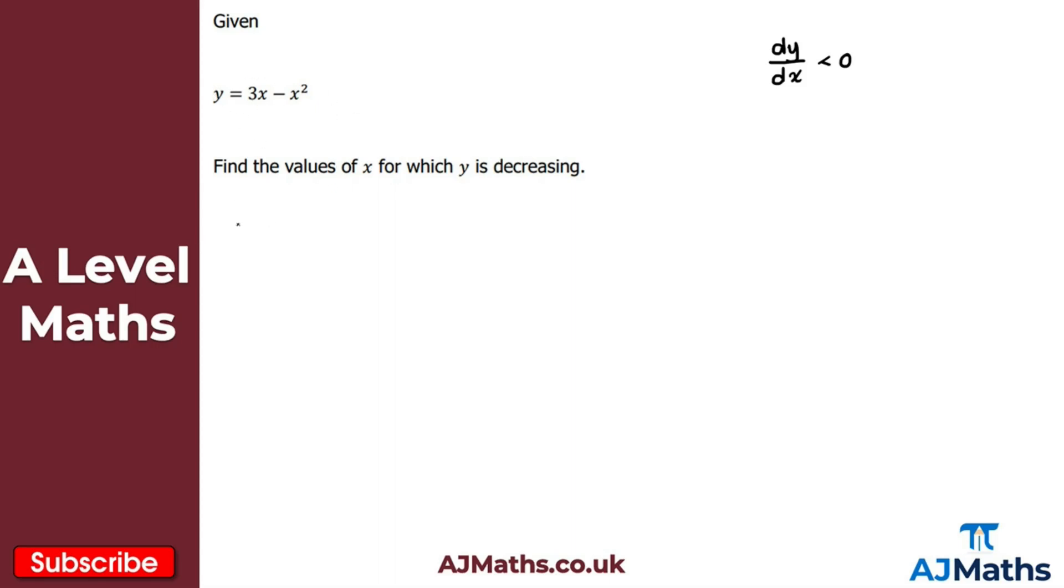So what I need to do here is differentiate y with respect to x. So 3x here, once I differentiate with respect to x, would give me three. So this is for dy by dx. That's equal to three. I've got minus x squared here, so once I differentiate that with respect to x, I'm going to get minus 2x.